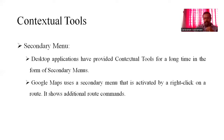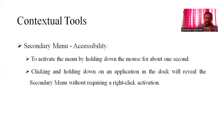There is a secondary menu. Desktop applications have provided the contextual tool for a long time in the form of a secondary menu. Google Maps uses a secondary menu activated by right-clicking on the route, showing additional route commands. This accessibility within the secondary menu can also be activated by holding down the mouse for about one second — clicking and holding on the application. This reveals the secondary menu without requiring a right-click activation.